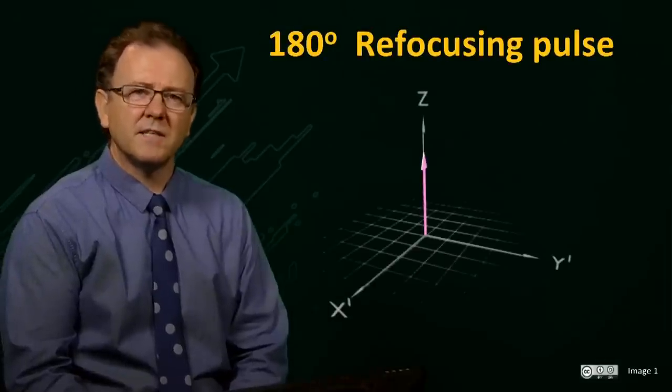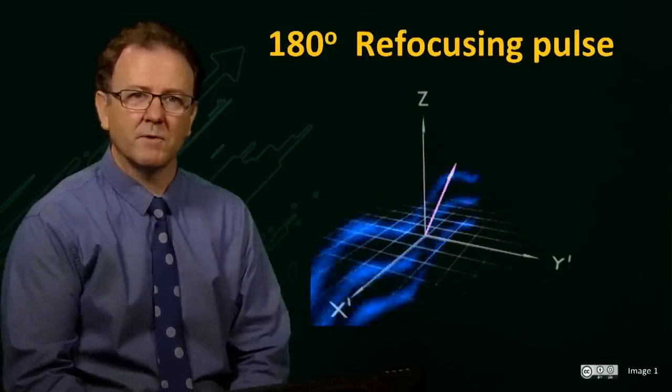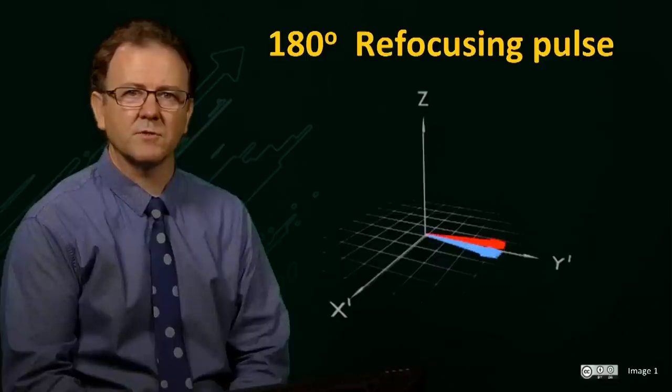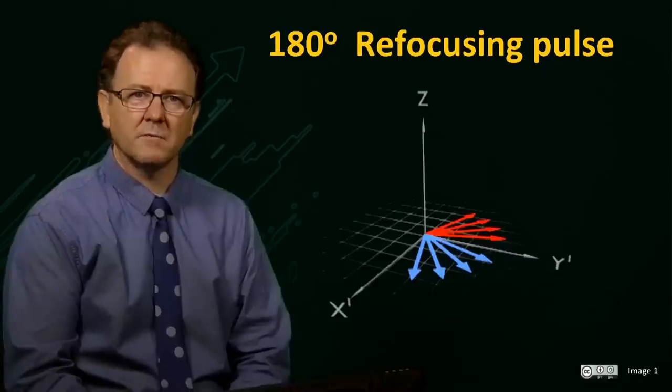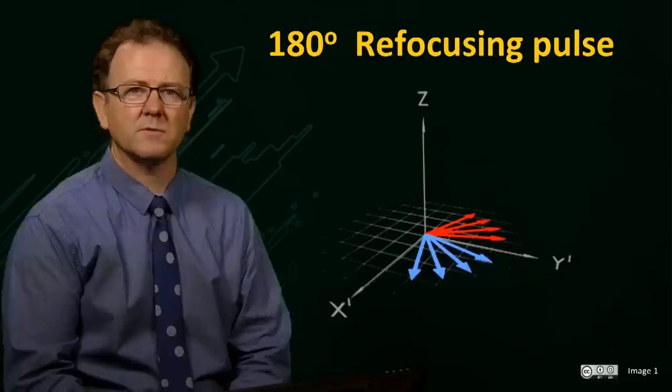It turns out that the dephasing of spin vectors can be reversed by applying a 180 degree pulse to the transverse magnetization. Initially, we create transverse magnetization with a 90 degree pulse.